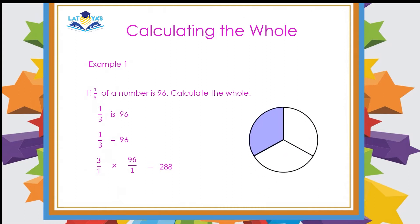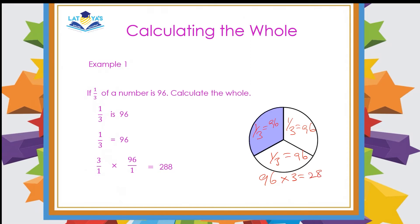I could have done the same question by using a fractional model. The question told me that 1 third of a number is 96. 1 third means 1 out of 3 parts. So if 1 third of this number is 96, then another third would also be 96, and another third would also be 96. So if I add 96 plus 96 plus 96, or multiply 96 by 3, I will get the same answer.